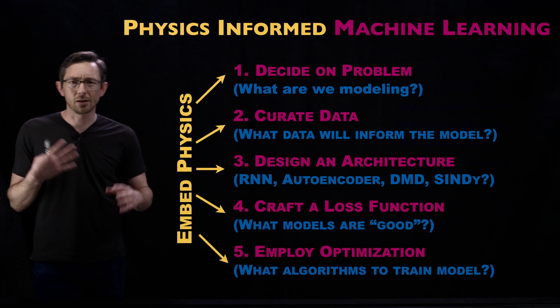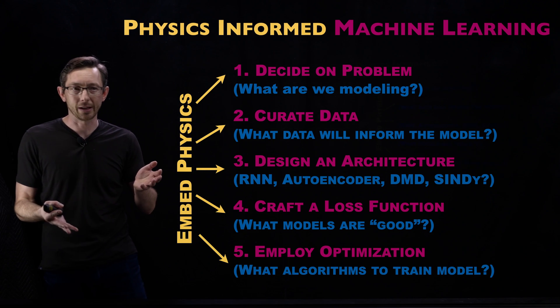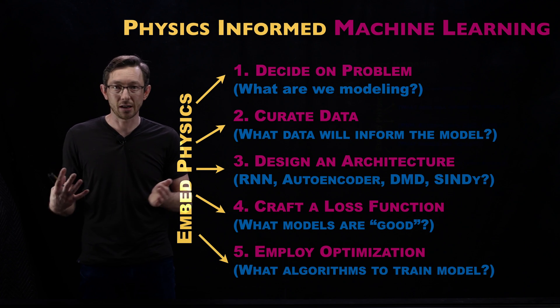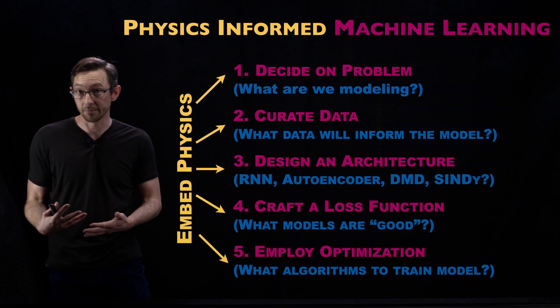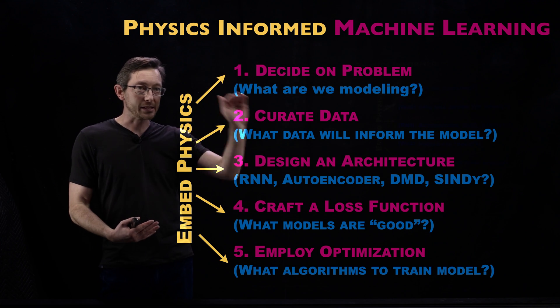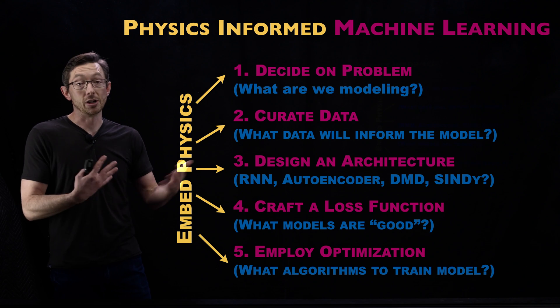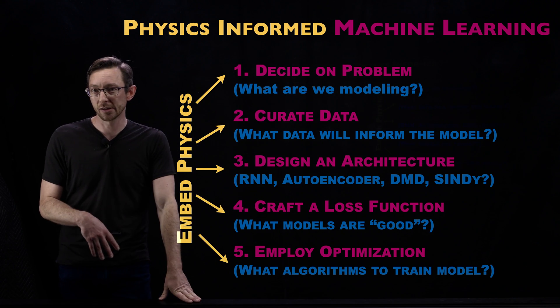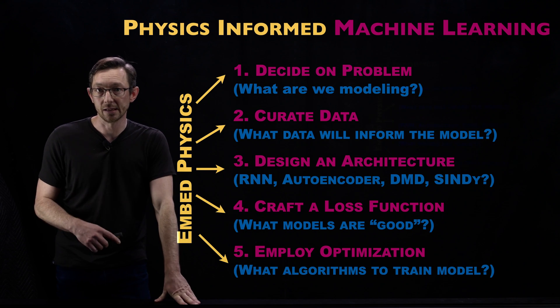The overarching framework for this physics-informed machine learning curriculum is based around this idea that machine learning is not magic. It's just the process of building models from data using optimization. There's some standard stages that go into building a machine learning model, and you can embed physics in each of those stages. Sometimes you can embed physics in multiple stages.